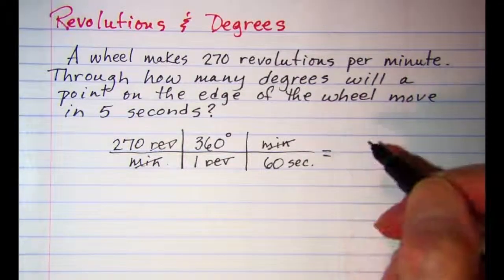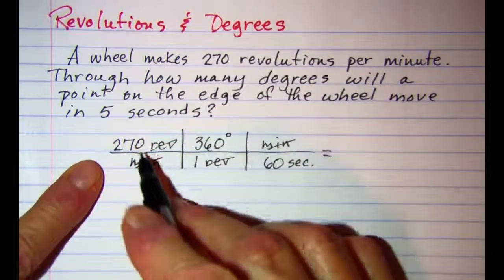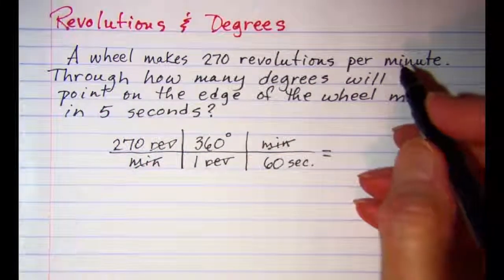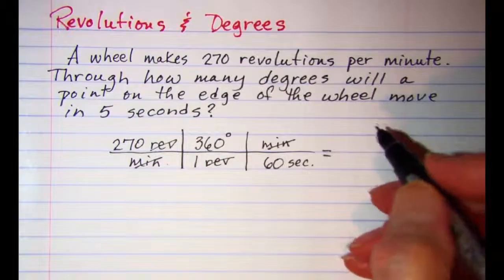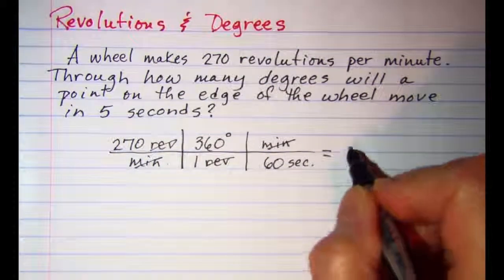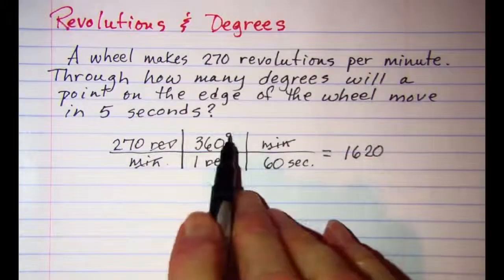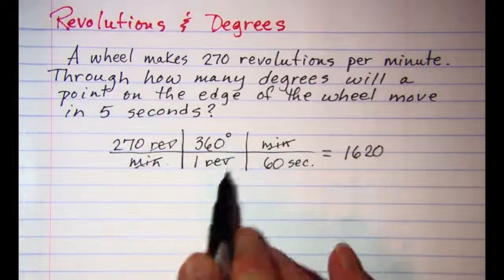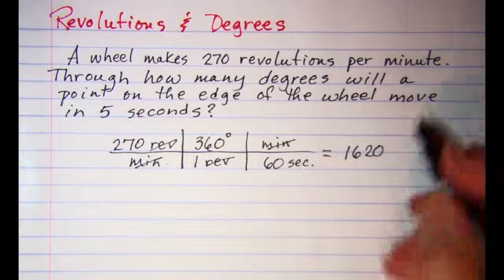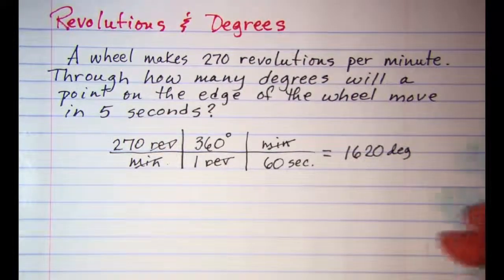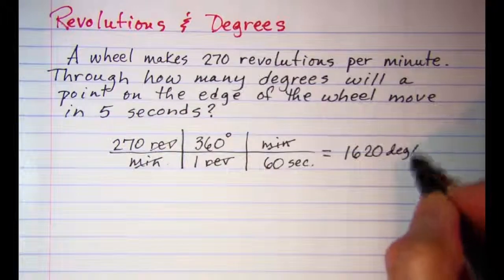So these factors when multiplied together will give me 1,620, and I am left with degrees per second. So I have 1,620 degrees per second.